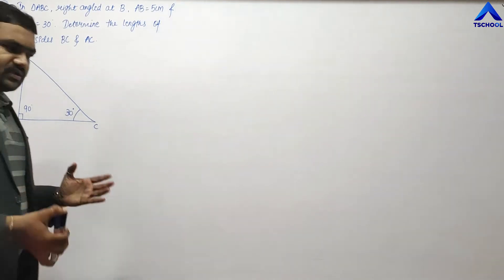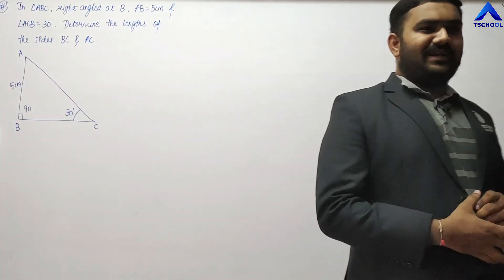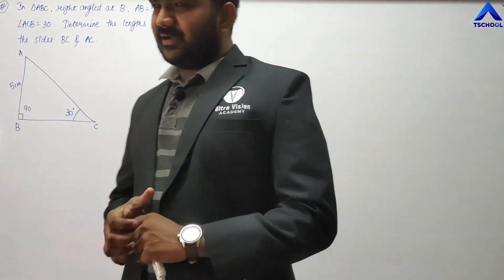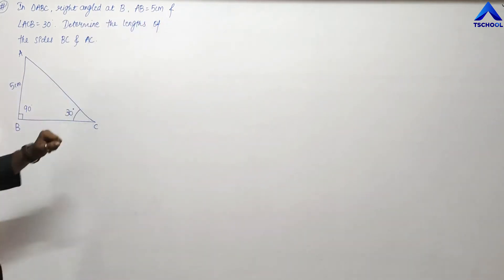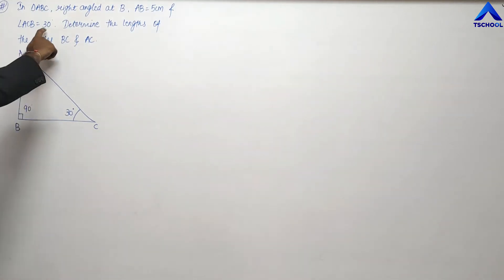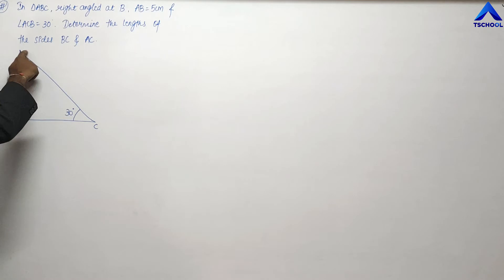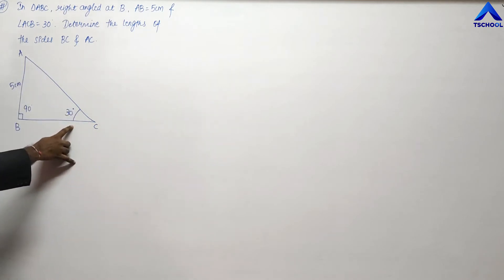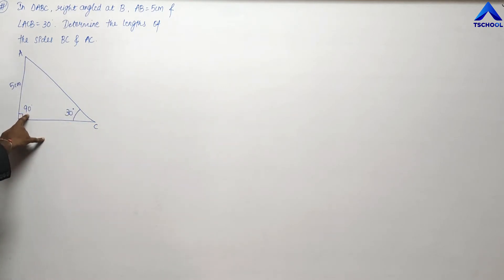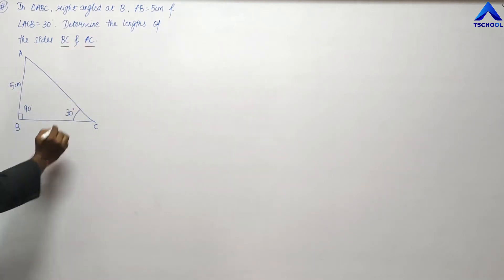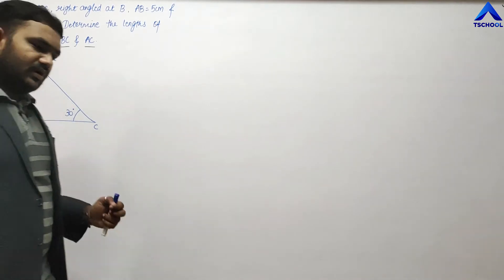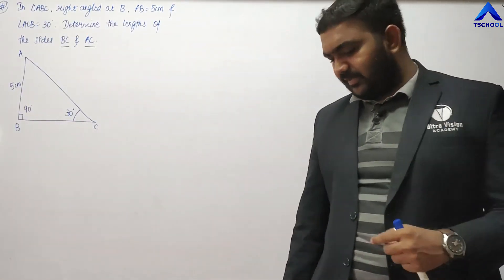Here we are given the situation that in triangle ABC, angle B is a right angle — right angled at B — with AB equals 5 centimeter and angle ACB equals 30 degrees. You can see that angle ACB is 30 degrees. We need to find out the lengths of sides BC and AC, which are not given.